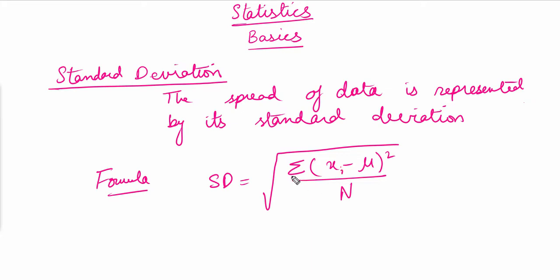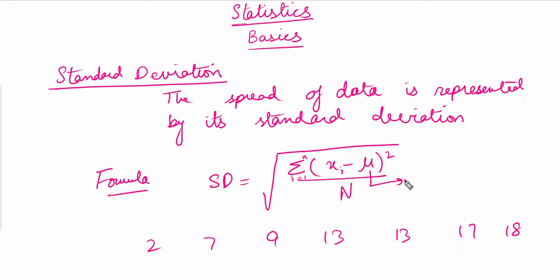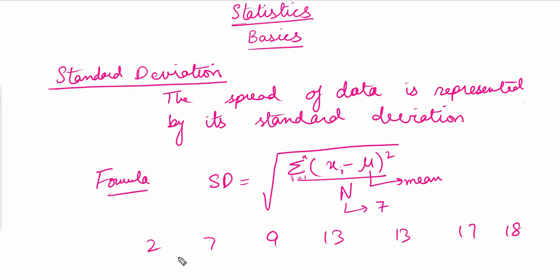Let's say we have n numbers in the data — for example: 2, 7, 9, 13, 13, 17, 18. First we work out the mean; mu represents the mean, n is the total count (here n equals 7), and x_i is the individual number. So it will be like (2 minus mean) squared divided by n, then (7 minus mean) squared, then (9 minus mean) squared, and so on for n from 1 to 7. We use this to compare how close data is to the mean — more spread means higher standard deviation.